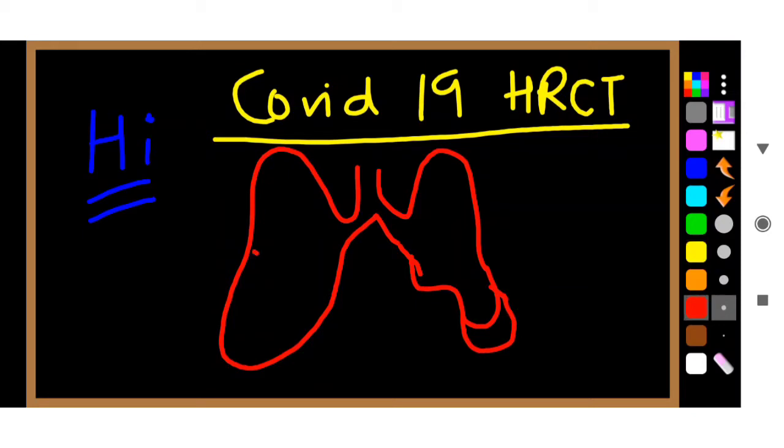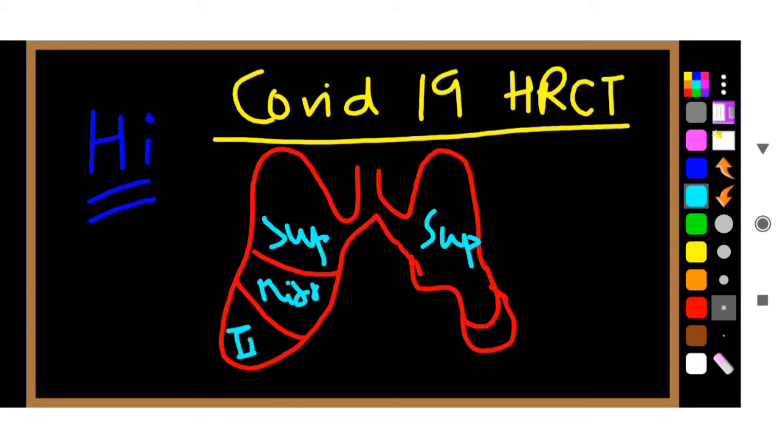So we have the segments. Let me write it down. This one is the superior lobe, this is also superior, this is middle (there is no middle in the left side), and this is inferior and this is also inferior.